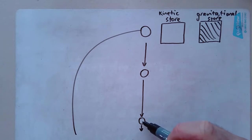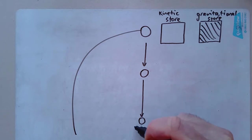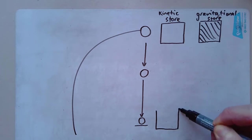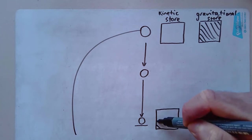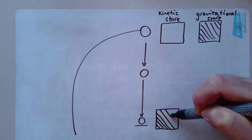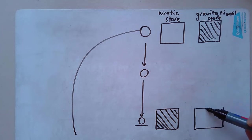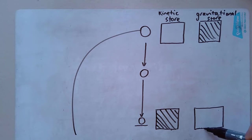This point here is where it's going to be just before it hits the ground. The instant before it hits the ground, its kinetic store is nice and full — it's moving really fast. What's in its gravitational store? Pretty much nothing. This is a simplified version, so we're imagining it as just the instant before it hits the ground, so there's basically nothing left in the gravitational store.